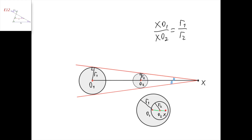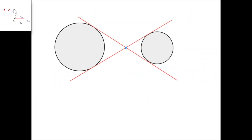Now, why does a homothety centered at x send this circle to this circle? Well, it surely sends o2 to o1 when we take the coefficient of homothety to be r1 divided by r2, because x·o1 divided by x·o2 equals r1 divided by r2. Hence one of the centers goes to the other center. And then, because all lengths get scaled by r1 divided by r2, this small circle turns into a circle with radius r2 times r1 divided by r2, which equals r1. The new circle has the same center and radius as this circle, so it's the same circle. Therefore, this one goes to this one under homothety with center x and coefficient r1 divided by r2. We can make the analogous argument for the internal center of homothety that sends this circle to this circle.